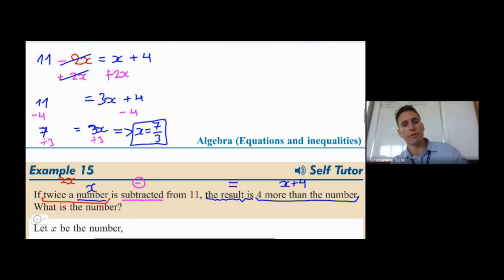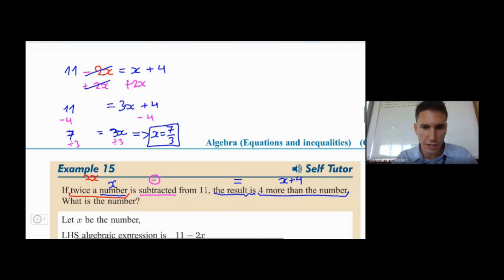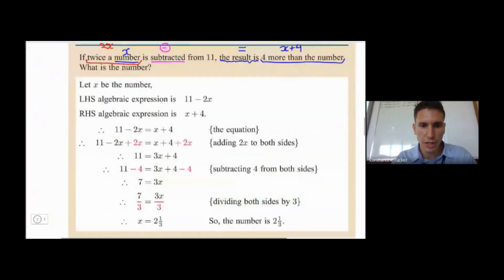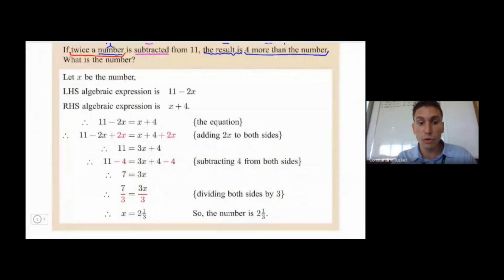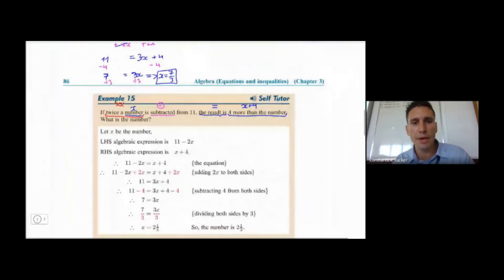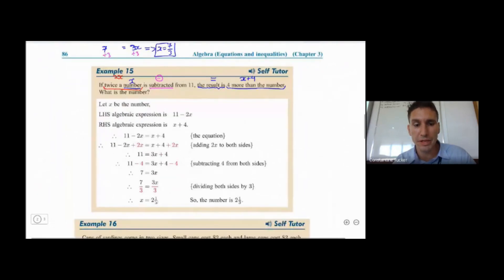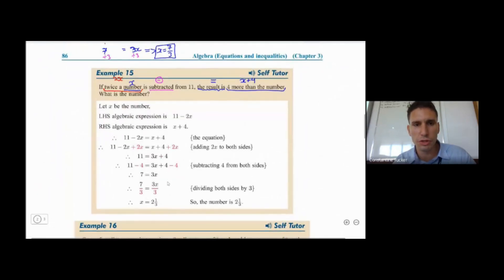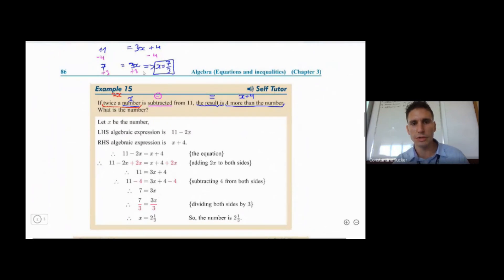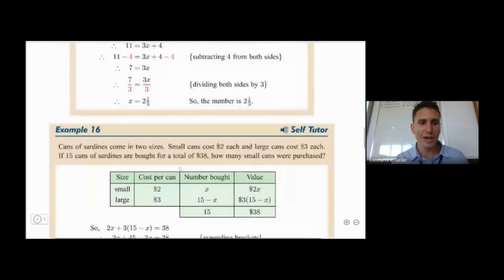It's best to leave the answer as a fraction — 7/3 — because as a decimal it would be recurring. So it's always better to write it this way. Generally, we're happy with improper fractions rather than mixed numbers, so please do not convert to mixed numbers.